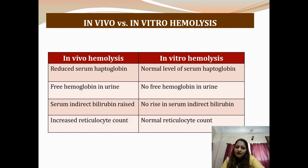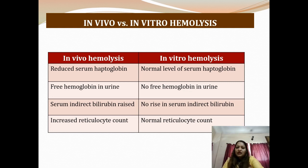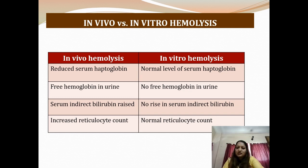Key differences between in vivo and in vitro hemolysis: in in vivo hemolysis, serum haptoglobin is reduced, whereas haptoglobin levels are normal in in vitro. Urine free hemoglobin is often found in in vivo but not in vitro. Serum indirect bilirubin is raised in in vivo because of excess load of broken-down RBCs producing more bilirubin. There is increased reticulocyte count in in vivo hemolysis but nothing of such is seen in vitro.